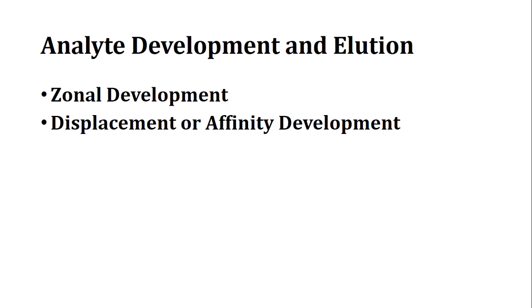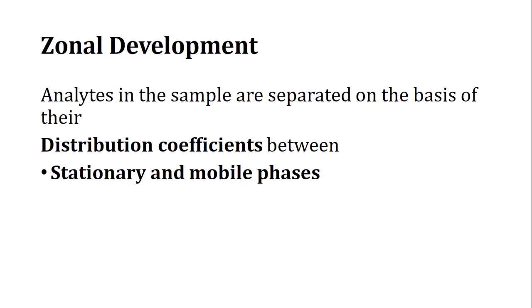There are two methods of elution, both responsible for analyte elution but with a technical difference. One is called zonal development or zonal elution, and the other is called displacement or affinity development. In zonal development, analytes are separated based on their distribution coefficient or partition coefficient between the stationary and mobile phases.